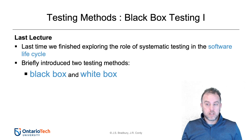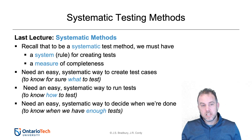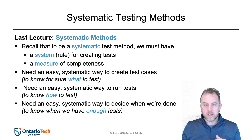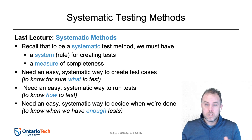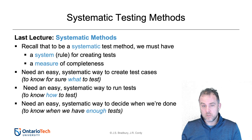We already covered what makes something a systematic testing method. A systematic testing method is one that has a system for creating tests and some measure of completeness. To be systematic, it needs to have an orderly way or a rule for creating the test and a measure for completing them. For example, with if statements in white box testing, you create a test case that makes the if statement true and one that makes it false, and the completion criterion is when every if statement has those two tests created.